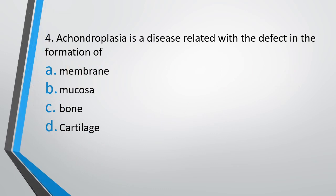Question number 4. Achondroplasia is a disease related with the defect in formation of membrane, mucosa, bone, or cartilage. The correct answer is option D, cartilage.